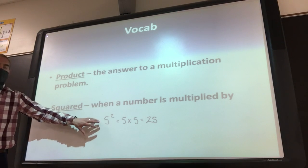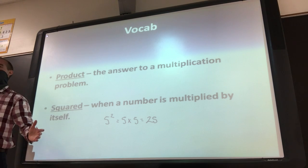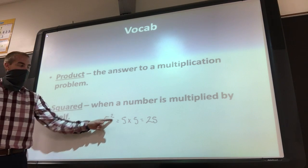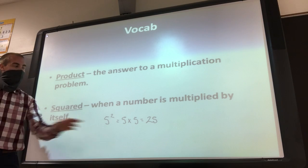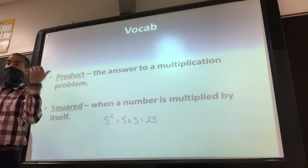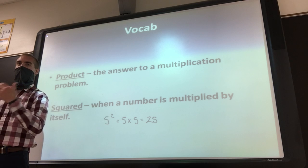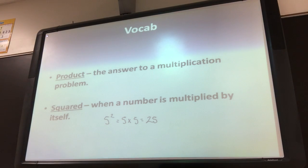A lot of times, what do you all think is the biggest mistake with 5 to the second power? A lot of times people do 5 times 2. It's not 5 times 2, it's 5 times 5. This number at the top means how many times are you going to multiply 5 by itself. So if it was 5 to the third power, it'd be 5 times 5 times 5. 5 to the fourth power, 5 times 5 times 5 times 5. So squared means we multiply that number by itself.